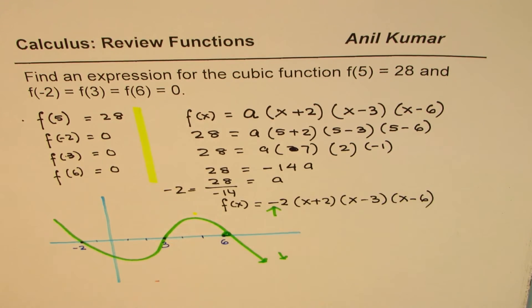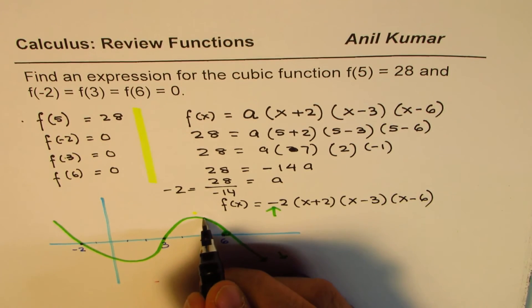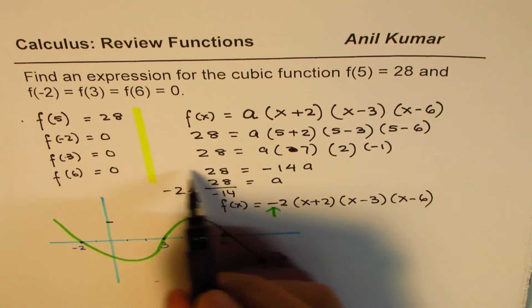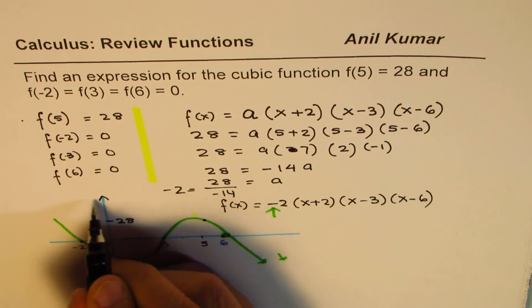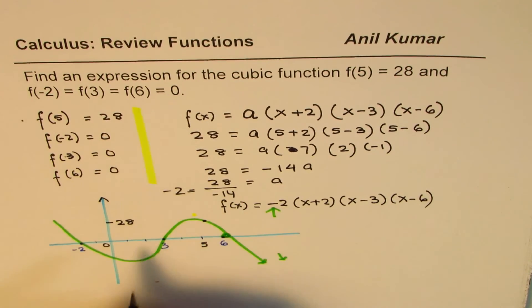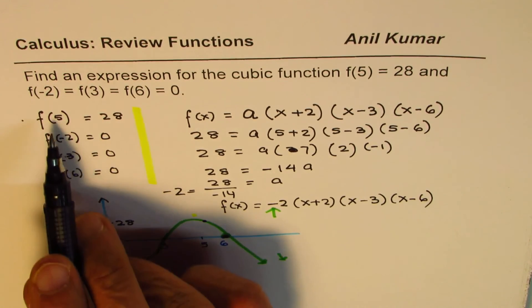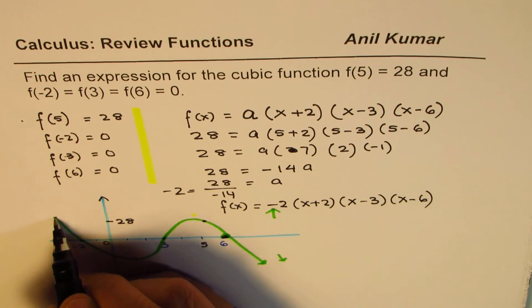So we get a function like this. Okay, this should have been at 6. Okay, so we get a function which can be sketched as shown here. Clearly, the point which is at 5, we have to label that as f(5), which is 28. Do you see that? So this is 28 for us. And that becomes a very specific function with the given zeros at minus 2, 3, and 6, and the value at 5 as 28.